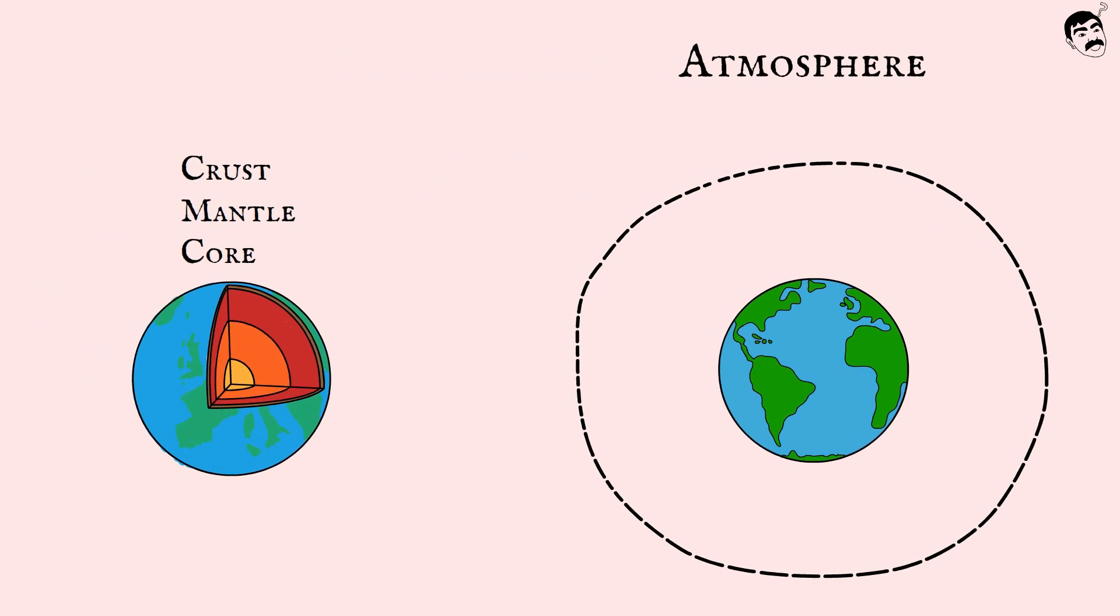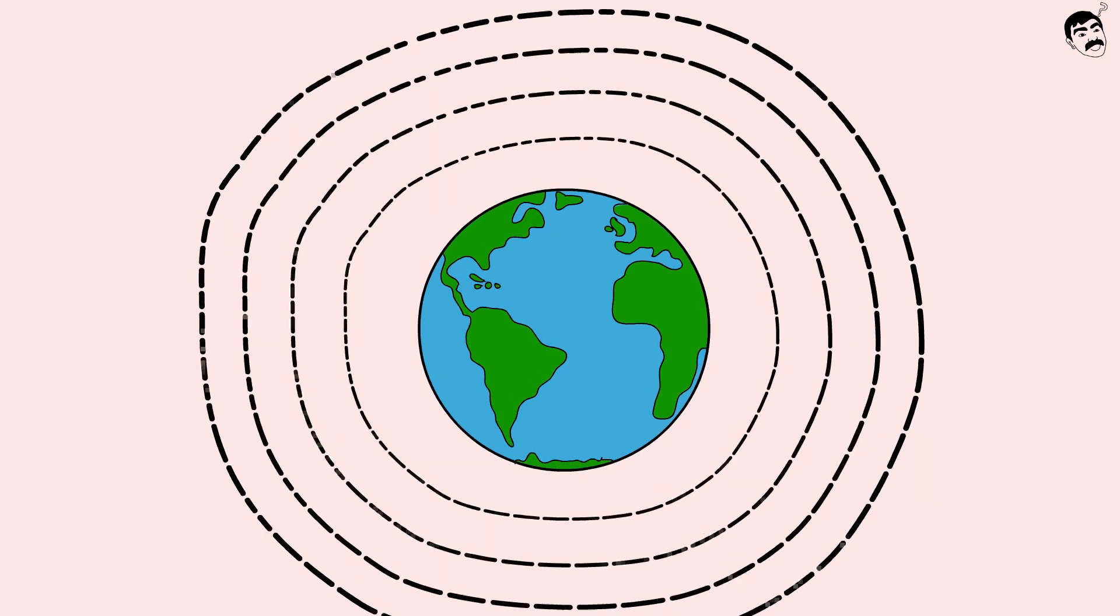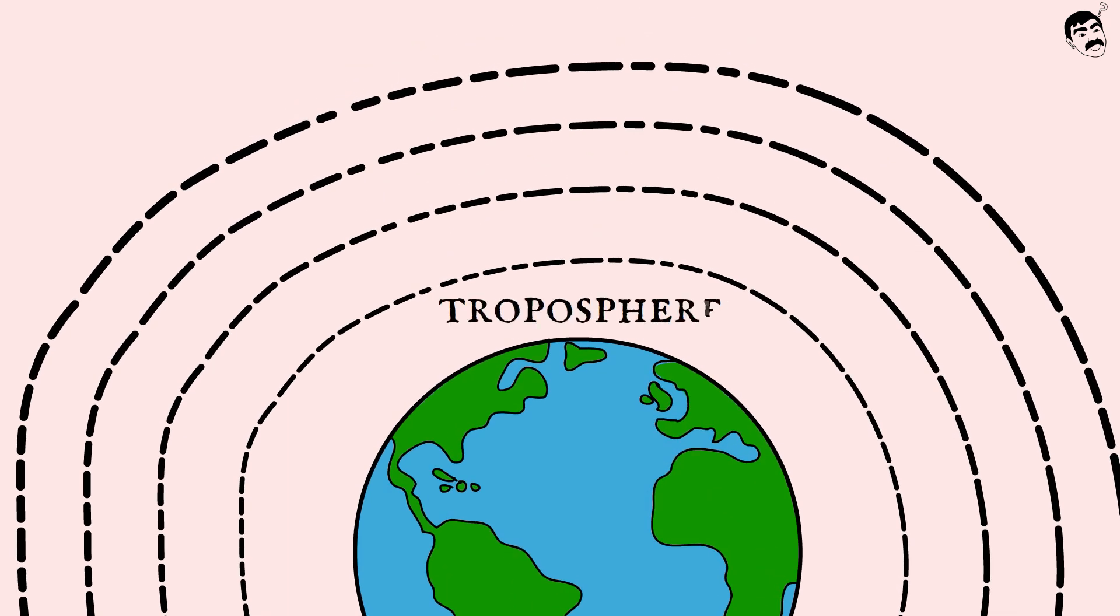Like the Earth's interior, the atmosphere too is made up of several layers. The first layer in the atmosphere is the troposphere, which exists till 15 km from the ground.